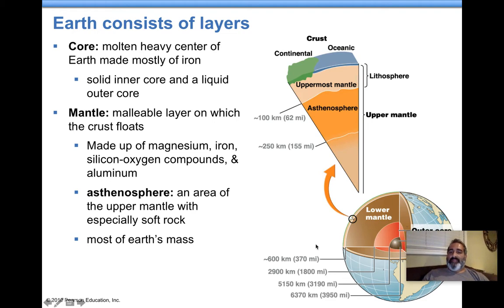This is what makes our Earth magnetic. Outside of that area, you have the liquid outer core. This is also made out of molten metal, molten iron mainly. Basically, a very heavy center part of our Earth that gives us our magnetic pull.